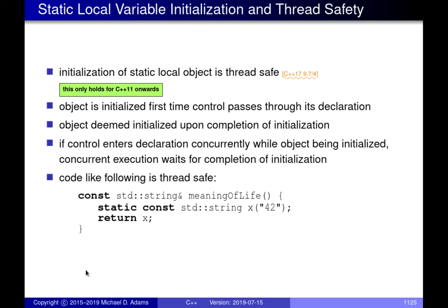The next topic is static initialization. If you have a local static variable, the point at which it gets constructed is the first time execution passes through the statement containing the declaration. So if you have a static local variable like this, the first time we hit that line, x gets initialized. Subsequent times we hit that line, nothing happens.